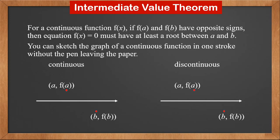If the function is continuous, to draw from a to b in one stroke without the pen leaving the paper, the graph must cross the x-axis. It may cross once, like this, or cross multiple times, like this.